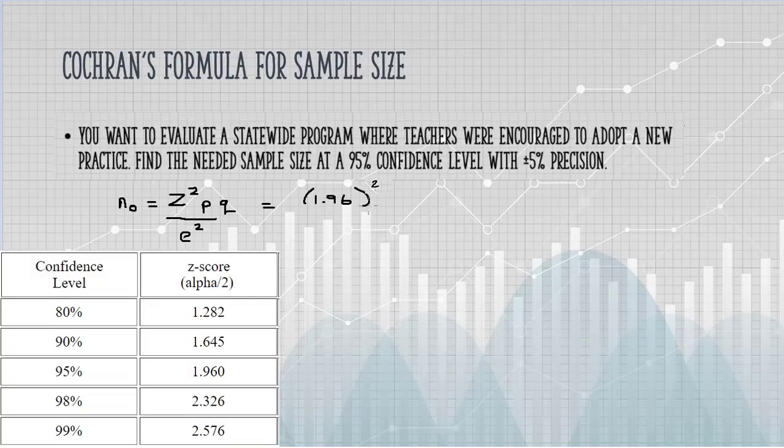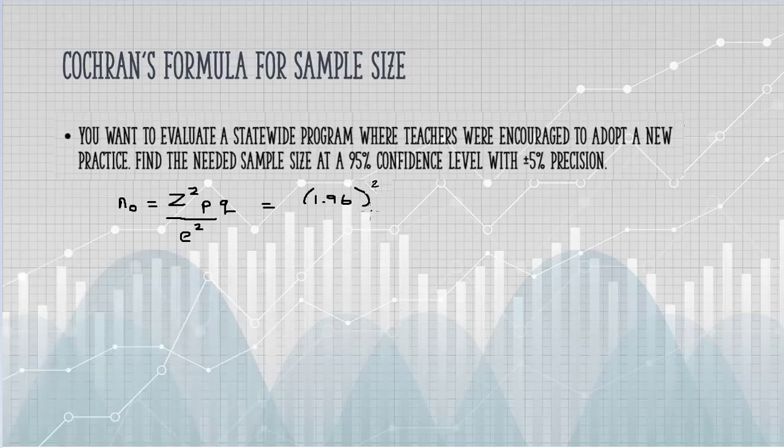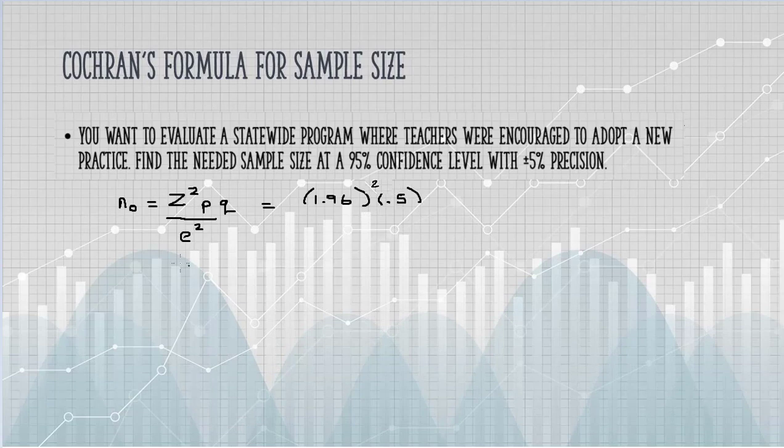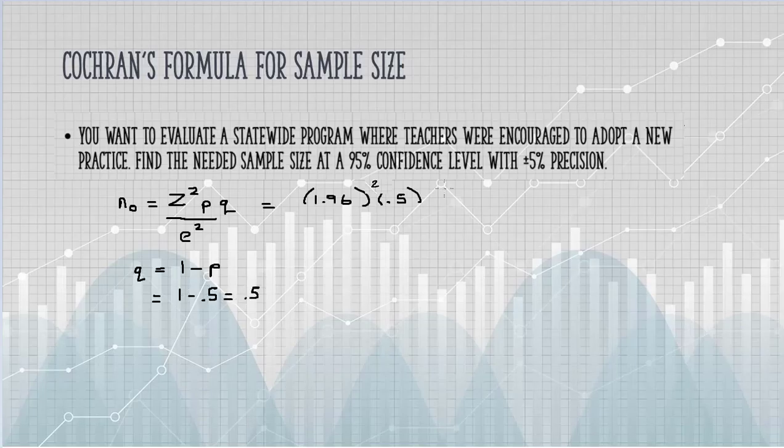We don't know the variability in the proportion, so we're going to use 0.5, which is maximum variability. Q is 1 minus P, so 1 minus 0.5 is 0.5.